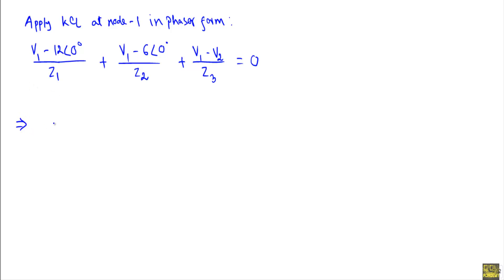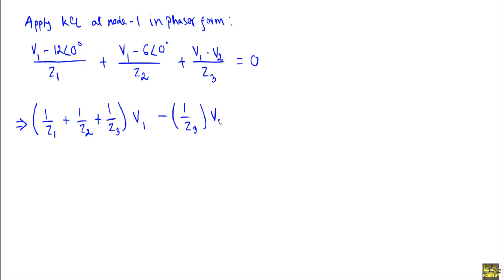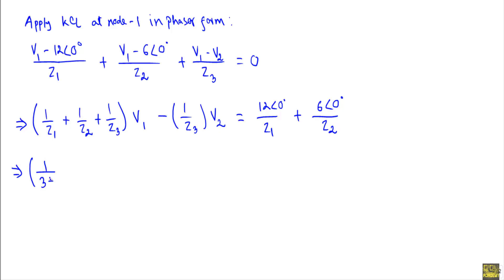Separating the coefficients I get: (1/Z1 + 1/Z2 + 1/Z3) multiplied by V1, minus (1/Z1 + 1/Z3) multiplied by V2, equal to 12∠0° over Z1 plus 6∠0° over Z2. Substituting the values: Z1 is equal to 3 plus j2, Z2 is equal to j3, and Z3 is equal to 4.